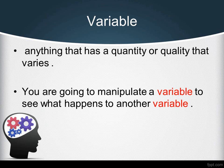First, we're going to define what a variable is. A variable is anything that has a quantity or a quality that varies.